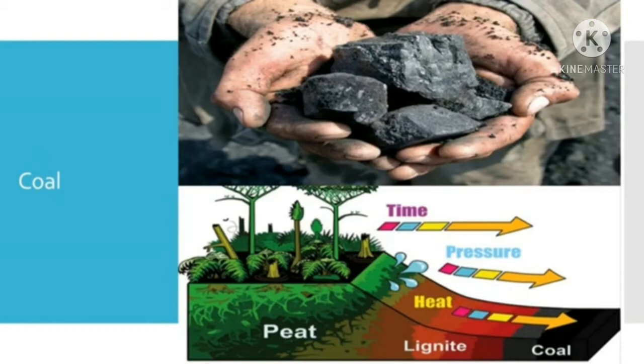Over time, peat was compressed due to high temperature and pressure and coal was formed. As coal contains mainly carbon, the slow process of conversion of dead vegetation into coal is called carbonization.